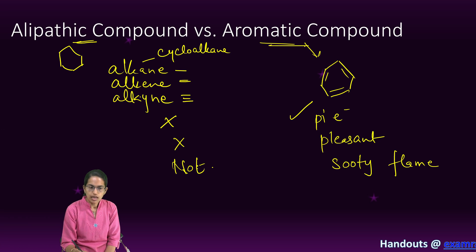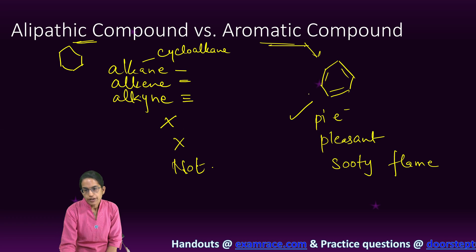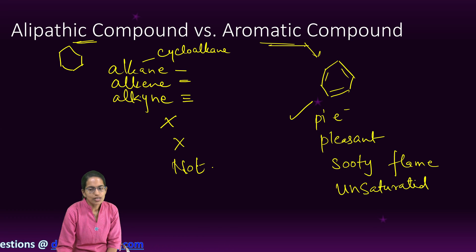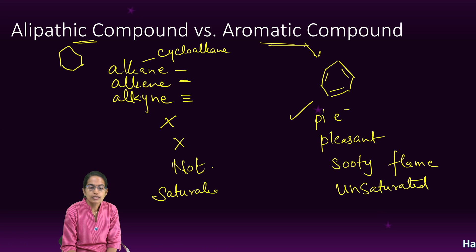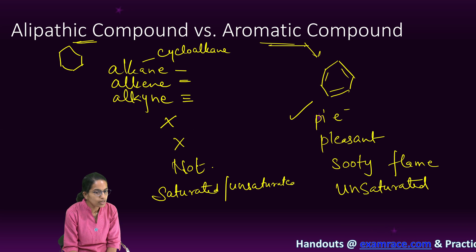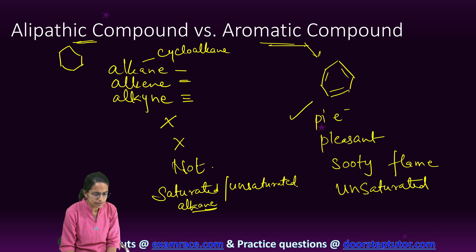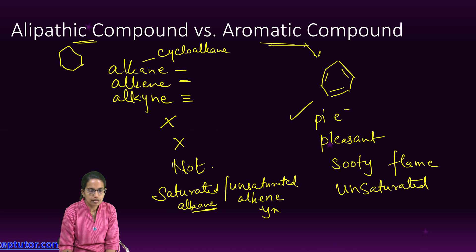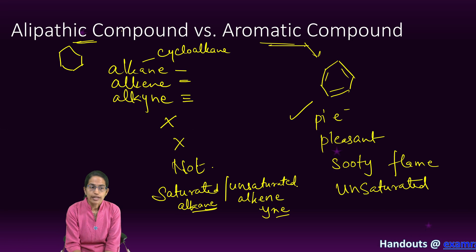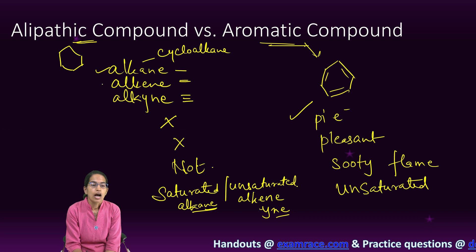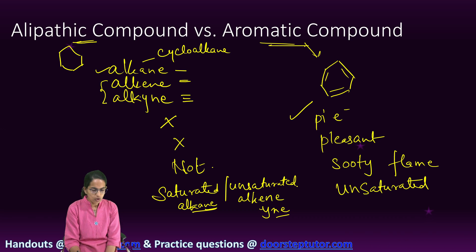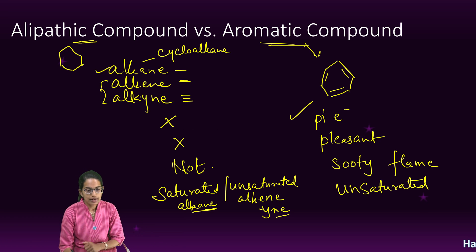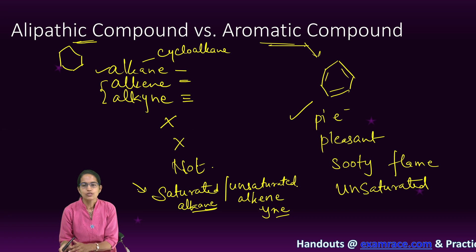When it comes to saturated or unsaturated: aromatic compounds, since they have resonating structures and delocalized pi electrons, are always unsaturated. However, aliphatic compounds can be saturated or unsaturated. Alkane is saturated, while alkene or alkyne — with a double or triple bond — is unsaturated. Aliphatic compounds can be saturated in the case of alkane or cycloalkane, or unsaturated in the case of alkene or alkyne. When unsaturated, they are more reactive; when saturated, they are stable and less reactive. Saturated compounds undergo substitution reactions, while unsaturated compounds work with addition reactions.